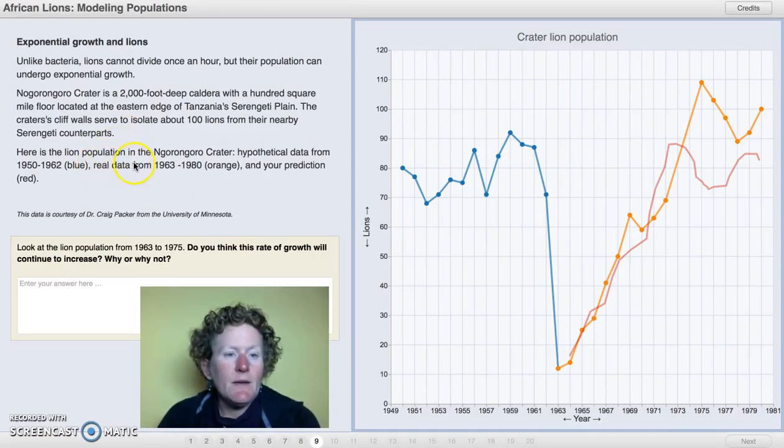Here is the lion population in the Ngorongoro Crater. Hypothetical data from 1950 to 1962 is in blue. Real data from 1963 to 1980 is in orange, and our prediction is in red.